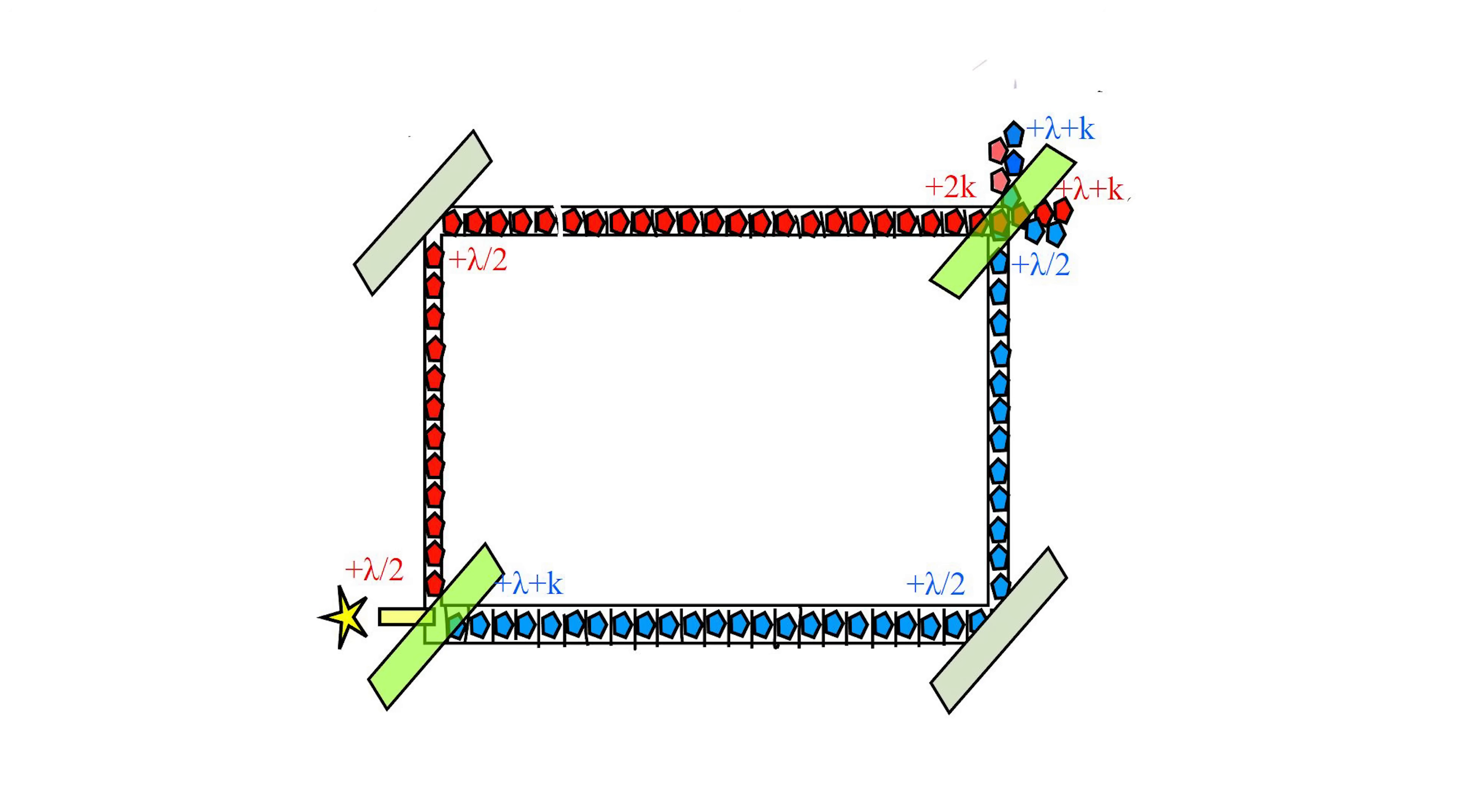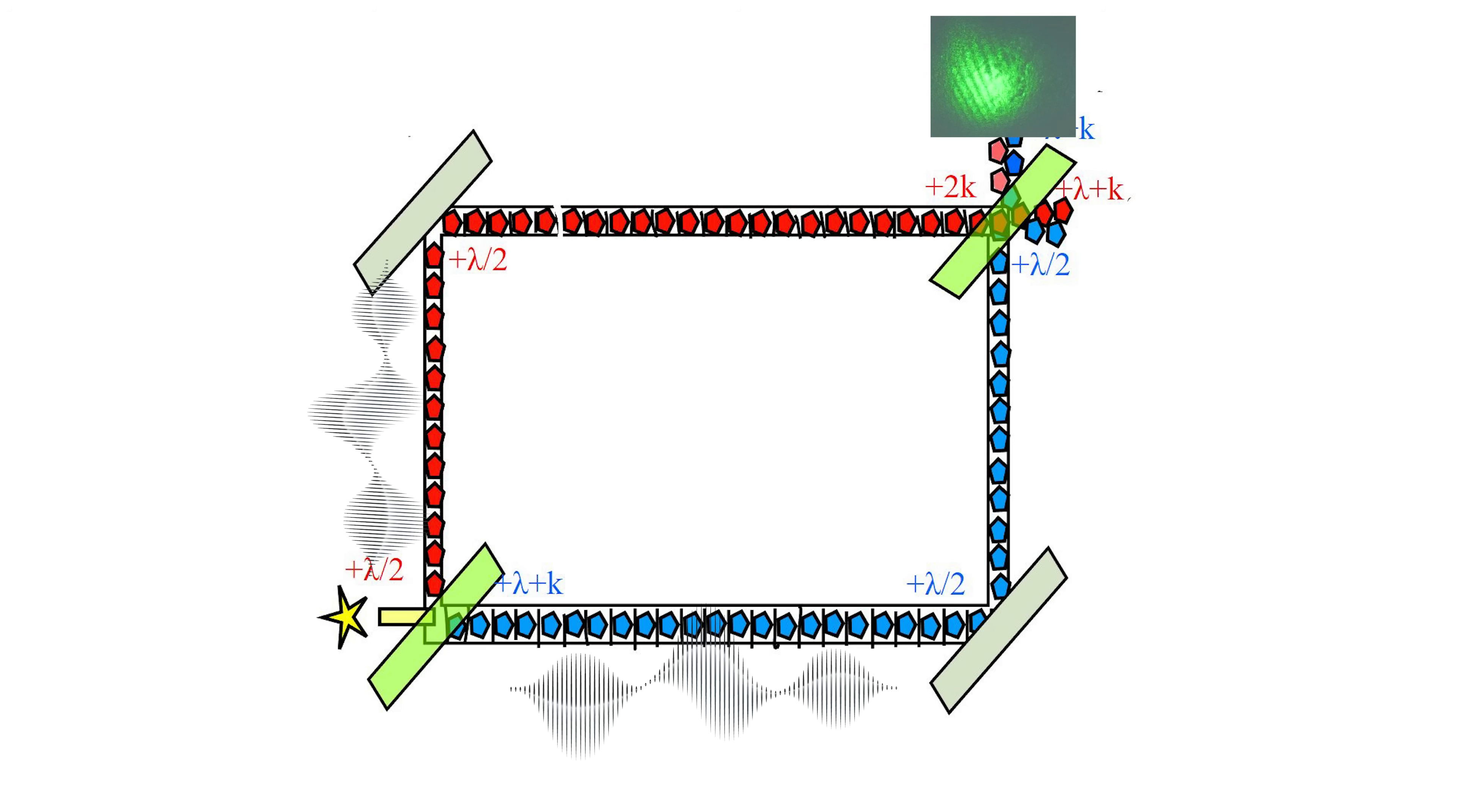So if we shoot through only one photon at a time, the odd thing is that they still accumulate on the backstop and show an interference pattern. So that means that the photons must have been traveling as waves that split up and went both directions, and then those waves recombined at the second beam splitter to make an interference pattern.